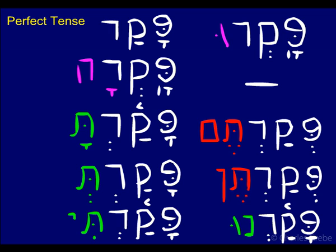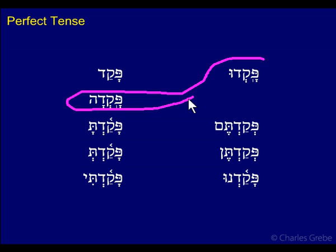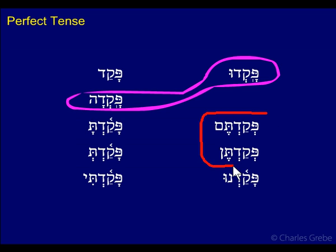Let's look at this in printed form and review it. Remember: you have pretonic reduction here with the vocalic endings — that metheg may or may not appear in your text. You have propretonic reduction with the heavy CVC endings. And then the CV endings have no reduction — you just add the ending straight on. So: vocalic, CVC, and CV endings.